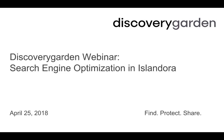Hello everyone and welcome to Discovery Garden's April 2018 webinar. My name is Adam Smith and I am the Business Development Manager here at Discovery Garden. This month's topic is on search engine optimization or SEO, which is the process of affecting the online visibility of a website in a web search engine's unpaid results. Islandora facilitates discovery and search engines using the Islandora XML sitemap module and on federated searches, making content available to users from locations where they are likely to originate their searches.